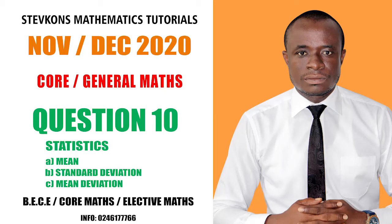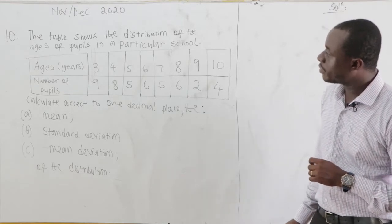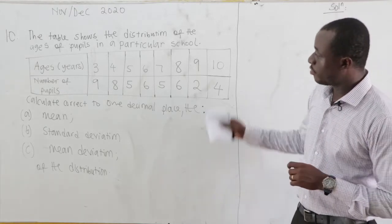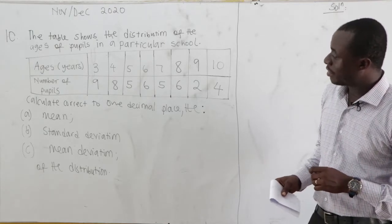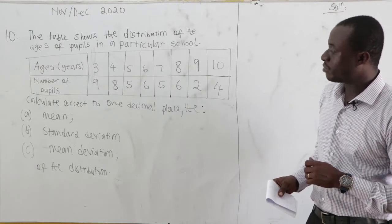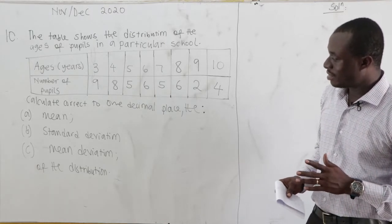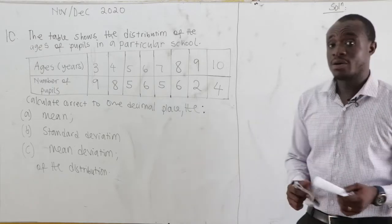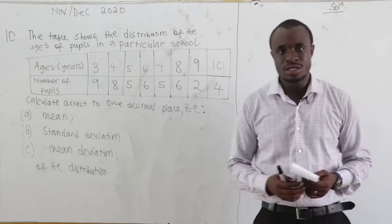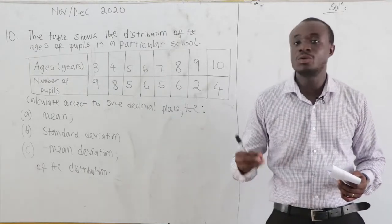November 2020 question number 10, based on statistics. The table shows the distribution of the ages of pupils in a particular school — we have ages in years and number of pupils. We have been told to calculate, correct to one decimal place: (a) the mean, (b) the standard deviation, and (c) the mean deviation. What is important is that we have to draw a table, and we need to know the formulas because the formulas will help us draw the table.